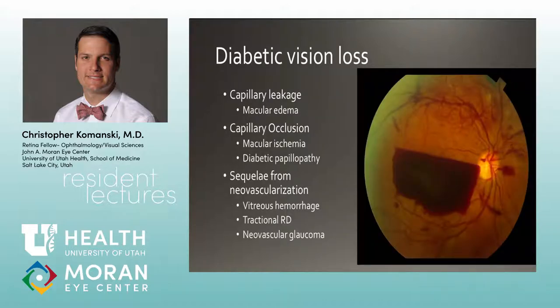Vision loss from diabetic retinopathy breaks down into two main problems: leakage from blood vessels, which leads to macular edema, and lack of blood flow, where capillary occlusion causes macular ischemia and long-term vision loss. Other sequelae include diabetic papillopathy, and from neovascularization: vitreous hemorrhage, tractional retinal detachments, and neovascular glaucoma.